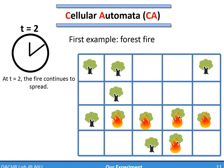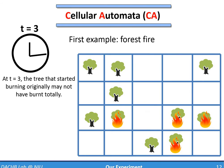And the fire continues to spread. At t equals two, some more trees may have started to burn. At t equals three, the fire continues to spread. A tree doesn't burn forever though, so eventually it's just turned to ashes and the CA can replace that cell by empty.